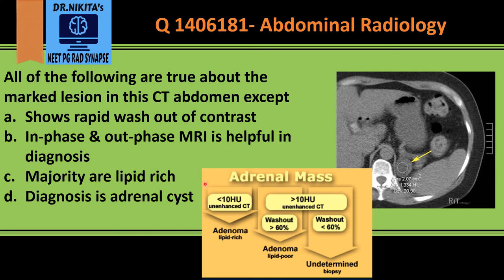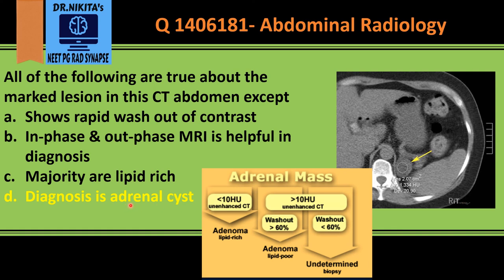Now evaluating the options: 'It shows rapid washout of contrast' — correct. 'In-phase and out-phase MRI is helpful in diagnosis' — correct, because in-phase/out-of-phase MRI is useful for fat-containing lesions; on out-of-phase MRI there is a signal drop if the lesion contains fat. 'Majority are lipid-rich' — correct, which is why they have less than 10 HU. 'The diagnosis is adrenal cyst' — this is incorrect, because the diagnosis is lipid-rich adenoma. It's important to know the imaging features.